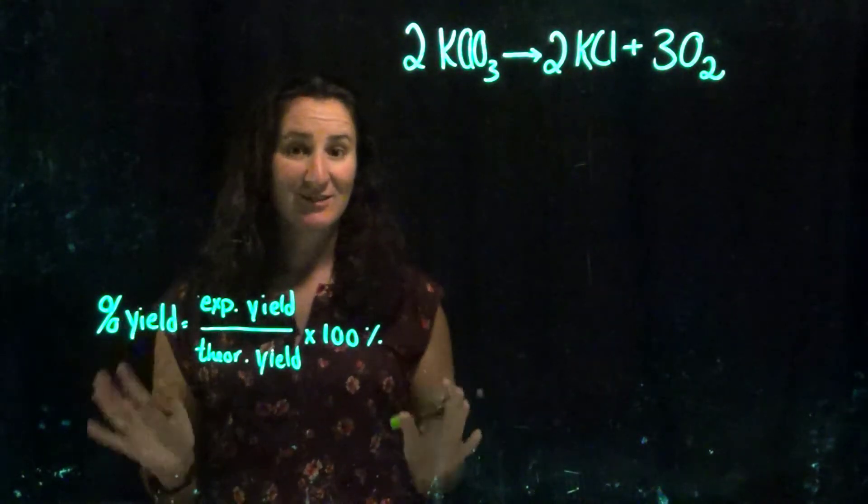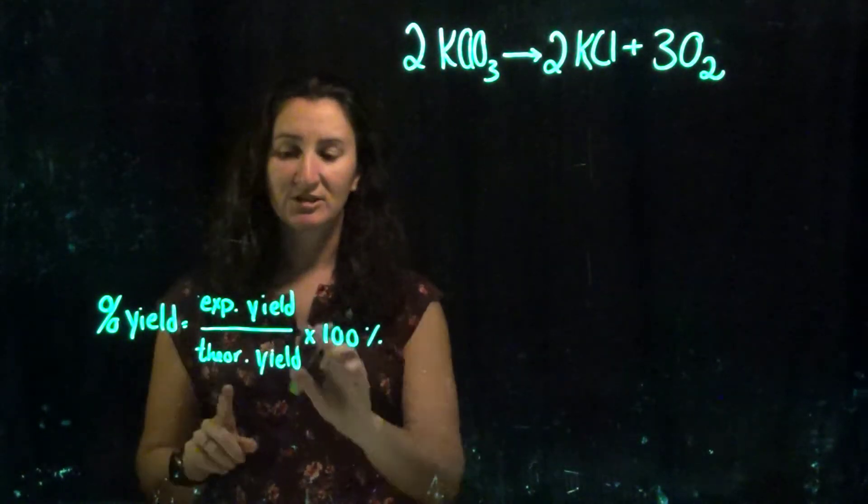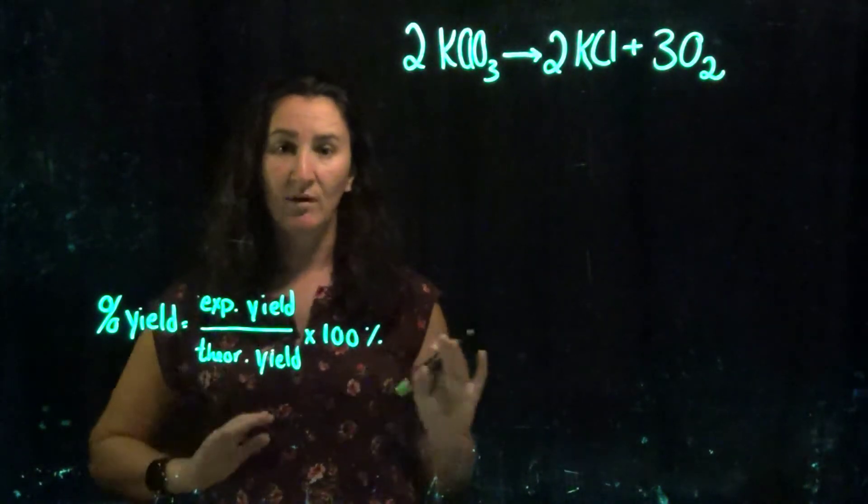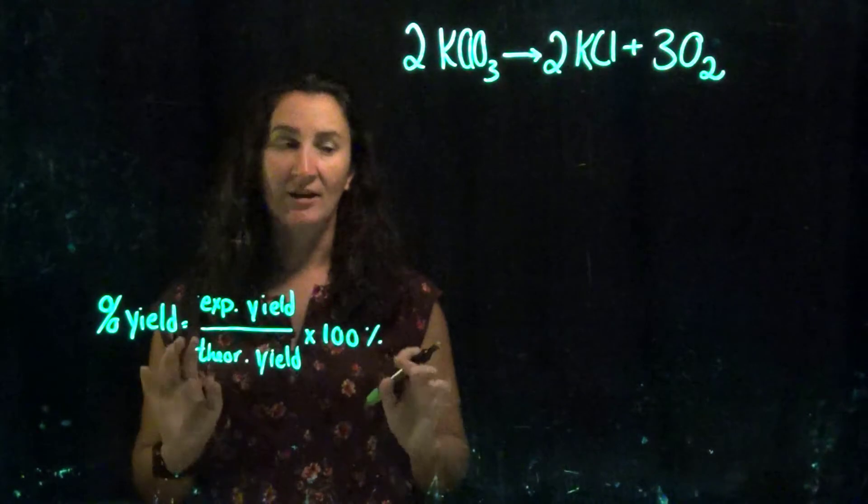So what does this look like? Let's do some example problems. We're going to do three just to solve for experimental yield, theoretical yield, and percent yield. We're going to do one problem where we're solving for each different thing.